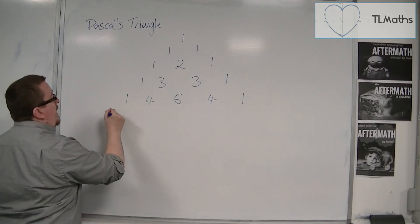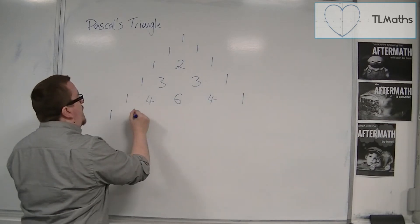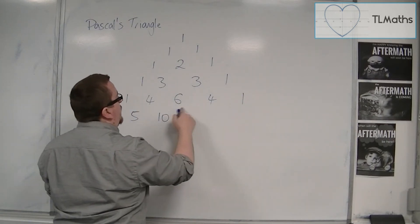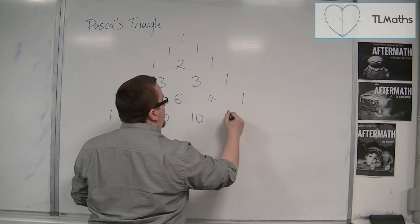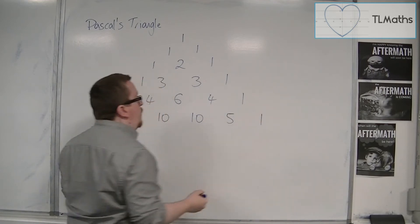So we go for another row. We have 1, then 1 and 4 is 5, 4 and 6 is 10, 6 and 4 is 10, 4 and 1 is 5, and then finally a 1.